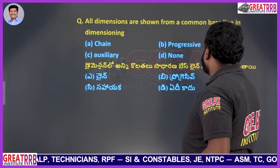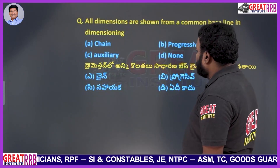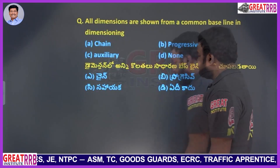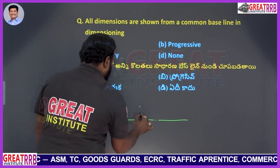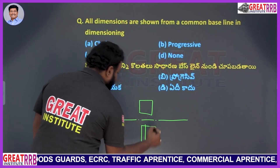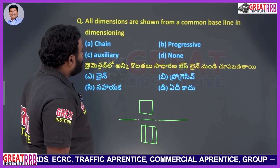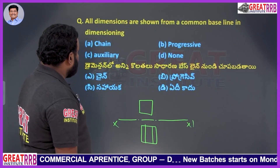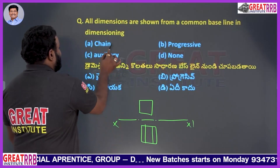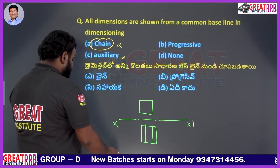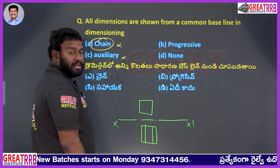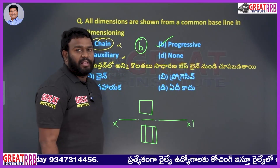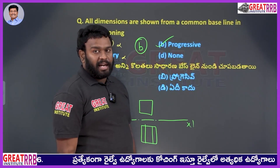All dimensions are shown from a common baseline in which type of dimensioning? A chain, B progressive, C auxiliary, D none. Chain dimensioning and auxiliary are different. In progressive dimensioning, all dimensions are shown from a common baseline. Option B, progressive, will be the right answer for the given question.